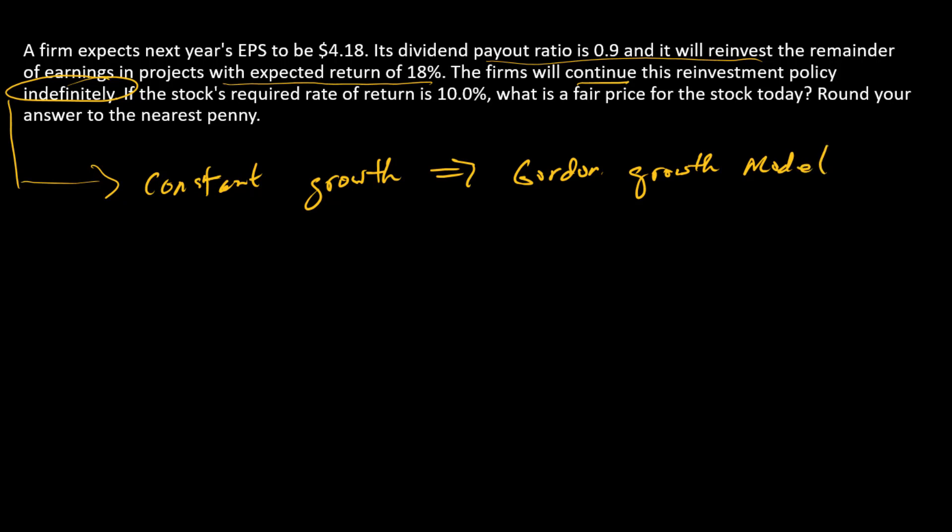So what does the Gordon growth model say? It says the price at time 0 is D1 divided by R minus G. And so that puts us into the place where we need to know what D and G are. If you look at the problem, those aren't given. So we're going to have to figure those out. So let's start with G. What's G going to be?